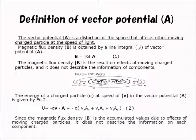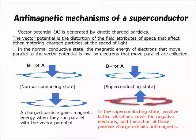The vector potential is given by equation 2. Since the magnetic flux density represents accumulated values due to the effect of moving charged particles, it does not describe the information on each individual component. Vector potential is generated by kinetically moving charged particles, and it represents the distortion of the field attributes of space that affect other moving charged particles at the speed of light.